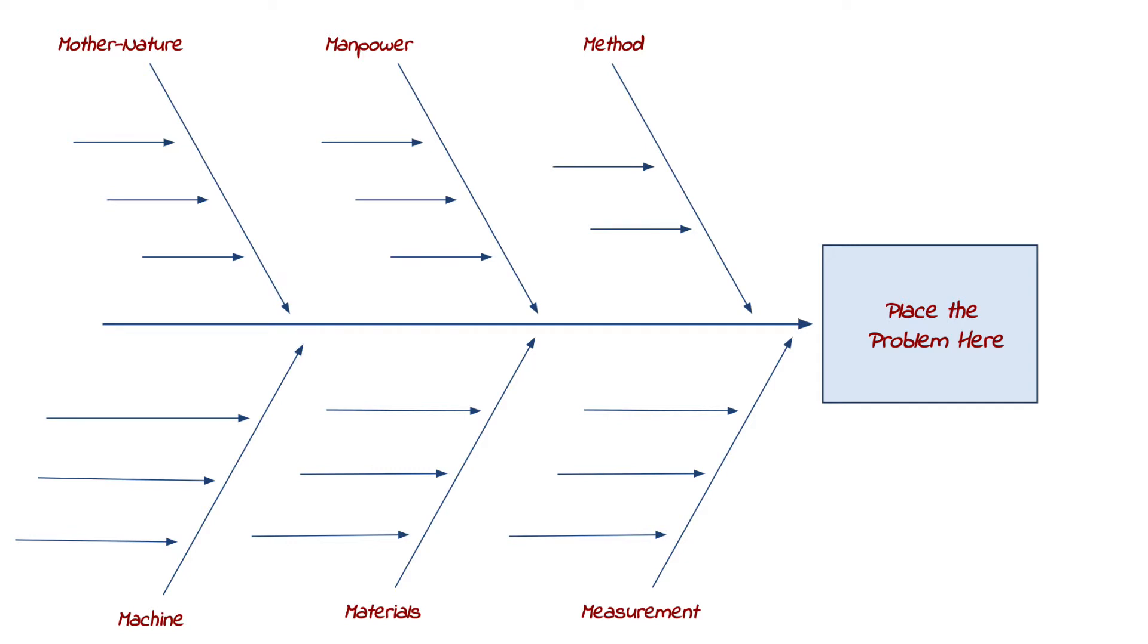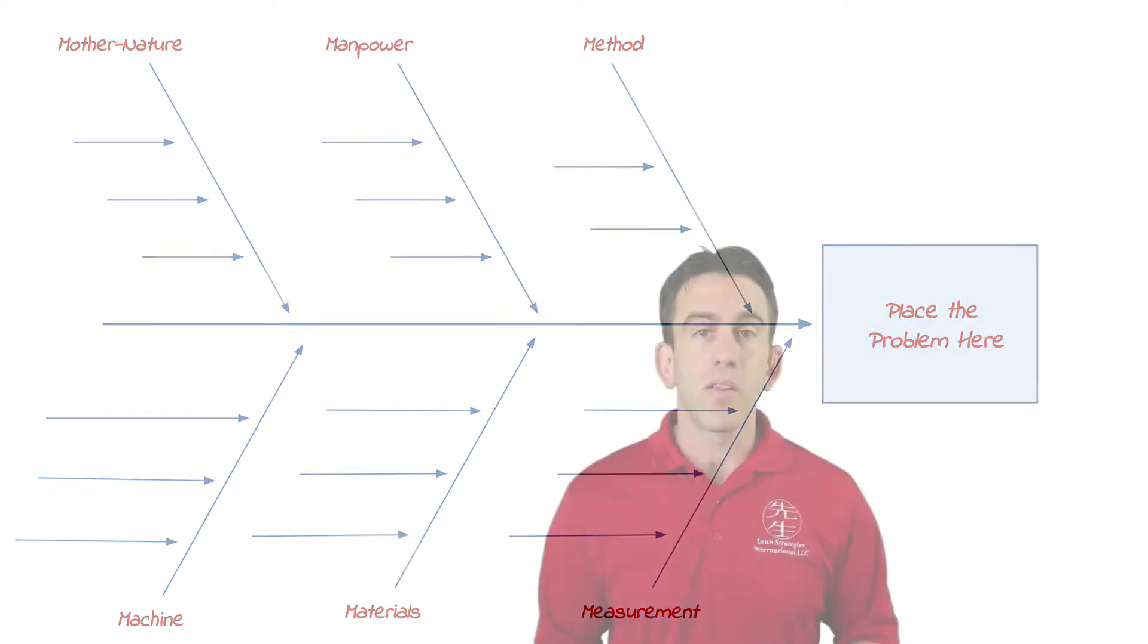As you can see, the diagram has three different elements to it: the effect that sits at the head of the diagram, the categories that make up the diagram, and the sub-causes or bones in the diagram. Let's look at each of these elements a little closer for a better understanding.